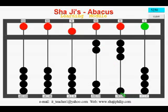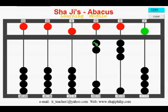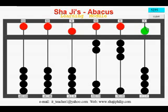Suppose 5200 and 35. This value represents 5000 here; two earth beams in the hundreds giving 200; three earth beams in the tens position giving 30; and here one heaven beam at the unit position, that is 5. So now the value is 5235.